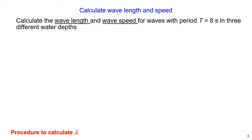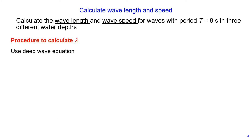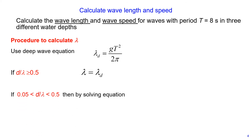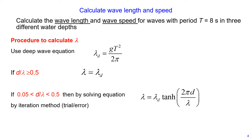The procedure we use to calculate wavelength is as follows. We start by using the deep wave equation, then calculate the ratio of depth divided by wavelength. If it's greater or equal than 0.5, we adopt the calculated wavelength. If the ratio is between 0.05 and 0.5, we need to solve the full equation by iteration or trial and error. If the ratio is less than 0.05, we use the shallow wave equation.